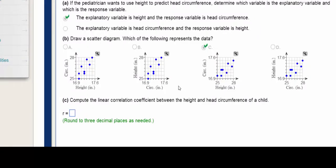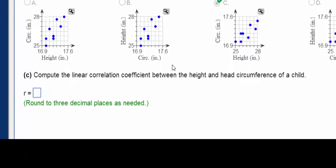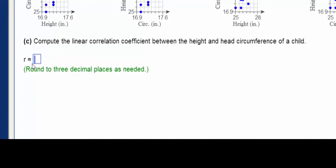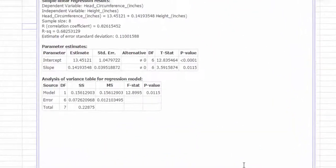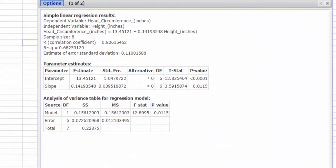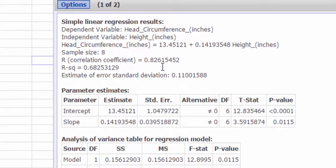Next question. Compute the linear correlation coefficient between the height and the head circumference. So that's my R value. So when I go back to StatCrunch and I click the arrow on the bottom, my R value up here was 0.826.